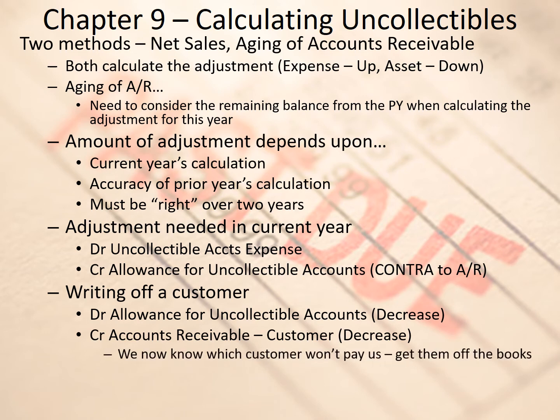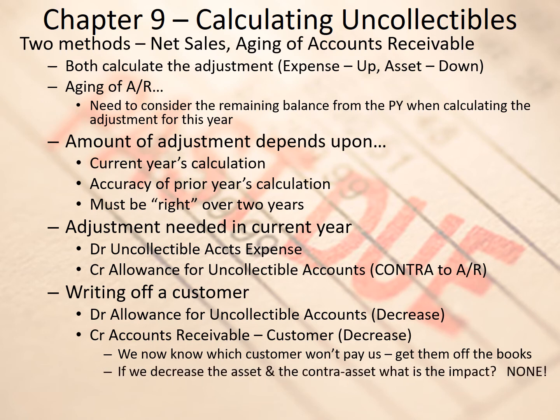Now that we know which customer won't pay us, we can get them off the books. Maybe they tell us, maybe we find out via an obituary, or maybe there's a declaration of bankruptcy — there are various reasons you find out an individual won't pay you. At that point you can write them off; that was part of the estimate from before. And just a quick review: if we decrease both the asset and the contra asset, the impact on the income statement and balance sheet is absolutely none.